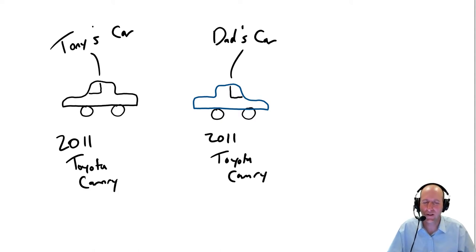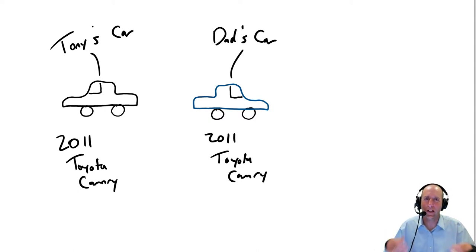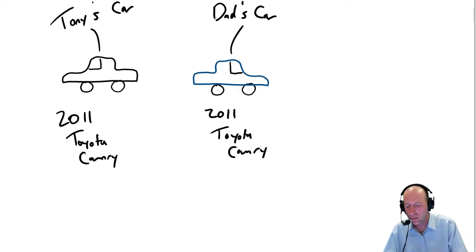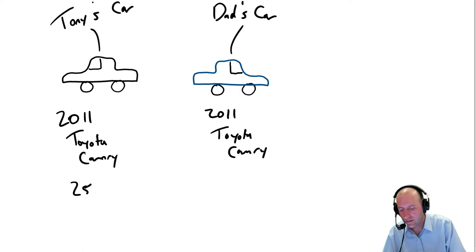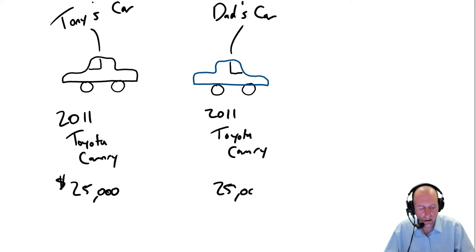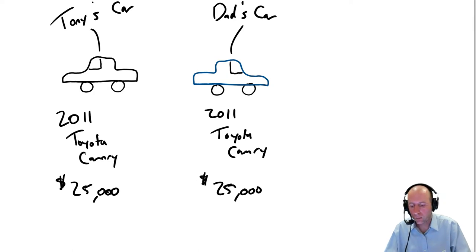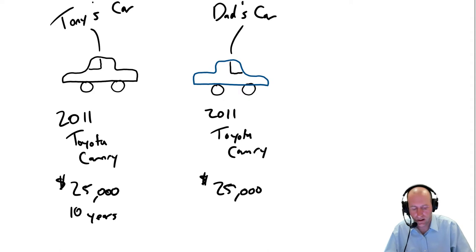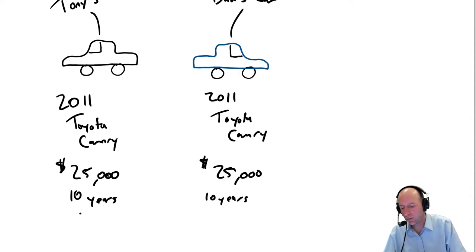Mine was black, his was blue, and the similarities were striking. Just for the purpose of our conversation, let's pretend we bought basically the same car. We both paid $25,000, we both plan to use the car for 10 years, after which time we both hope to sell the car for $5,000.